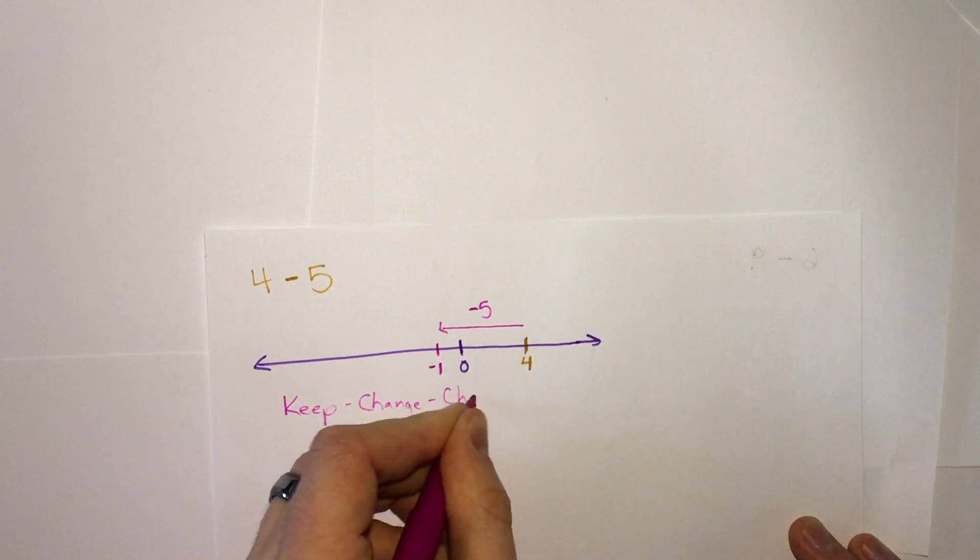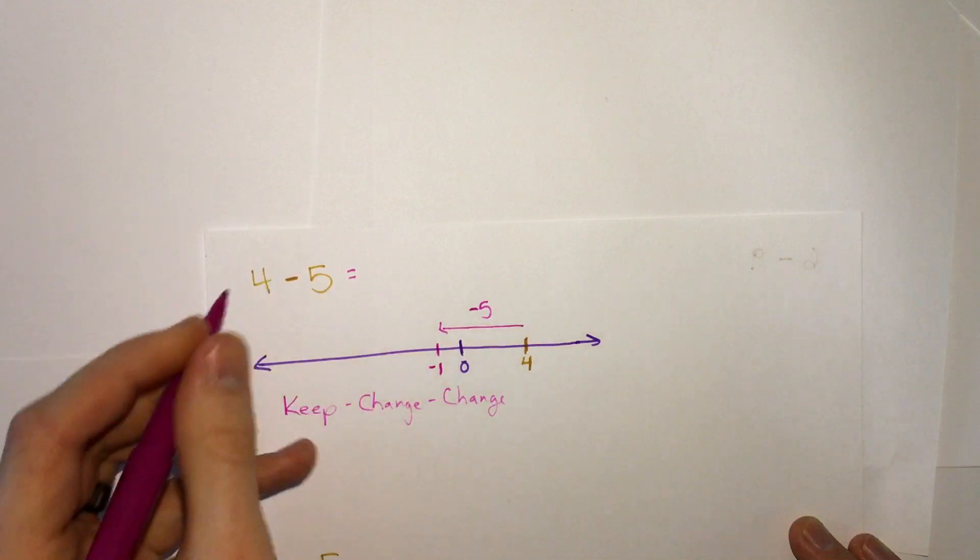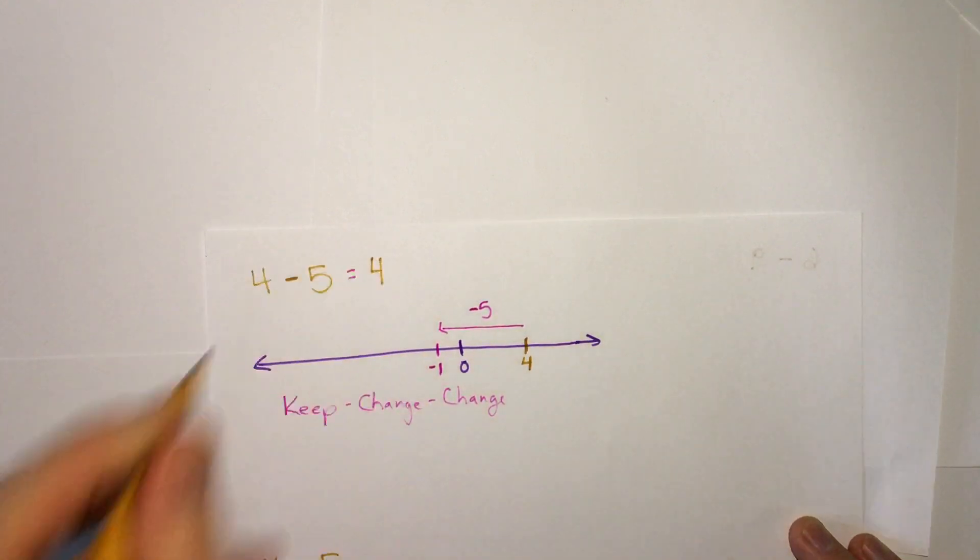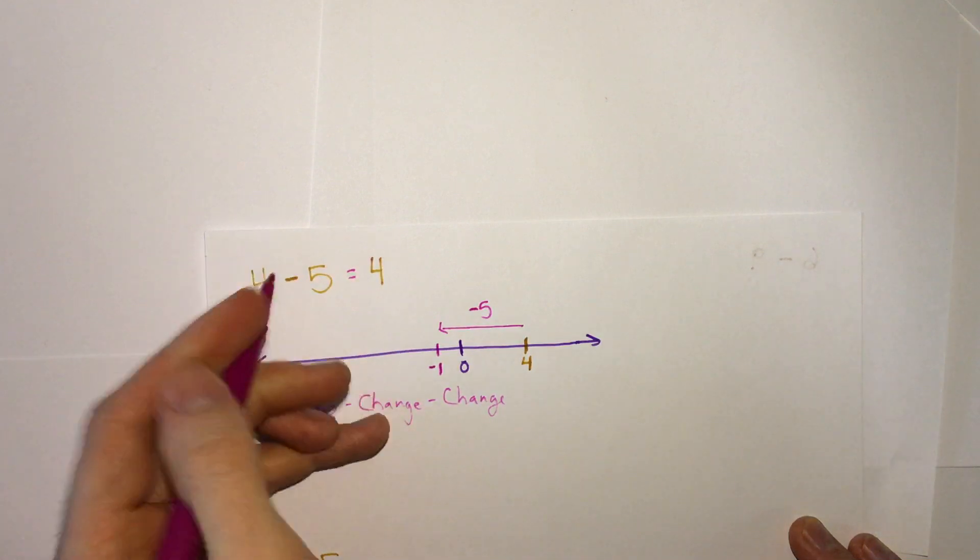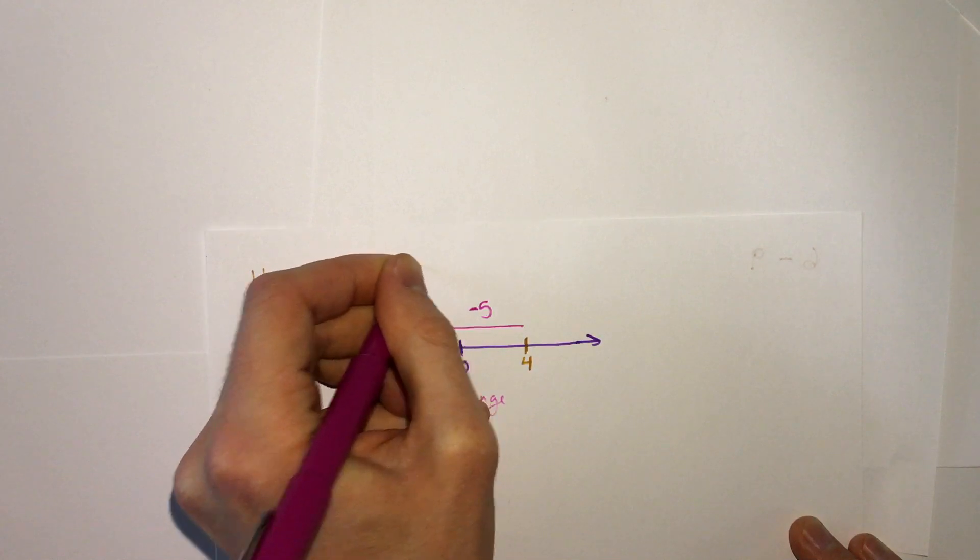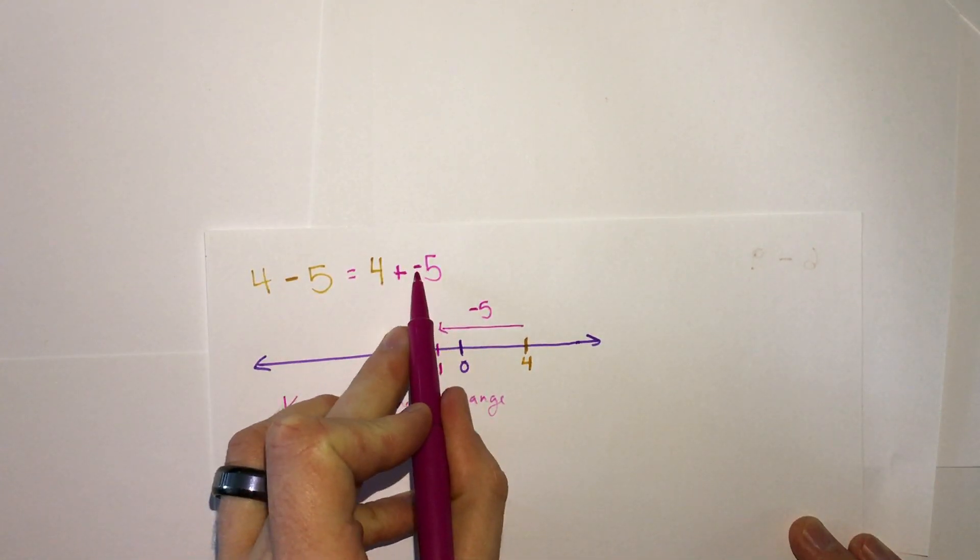What that means is we're going to take a subtraction problem, and we're going to keep the first one, it's going to be 4, then change the subtraction to addition, and change the sign of that number after it. So keep, change, change.